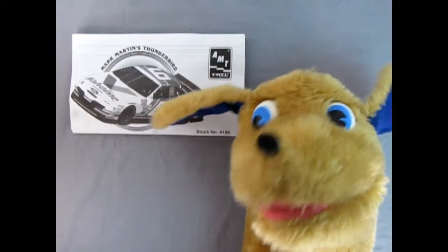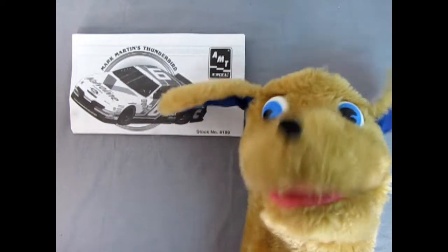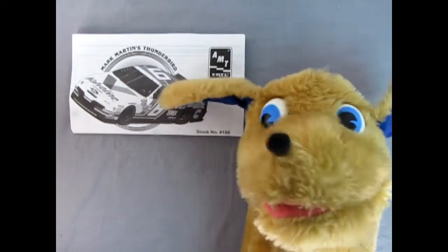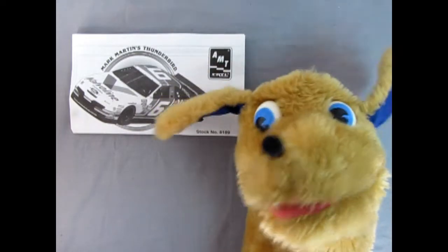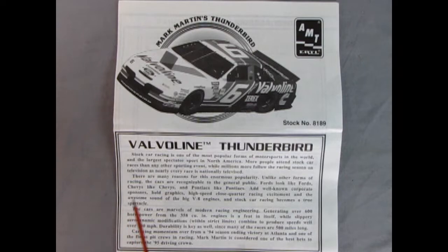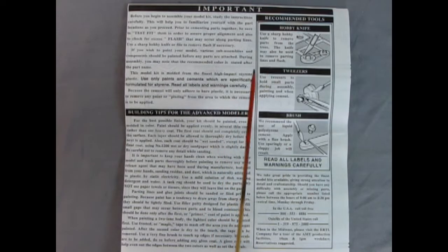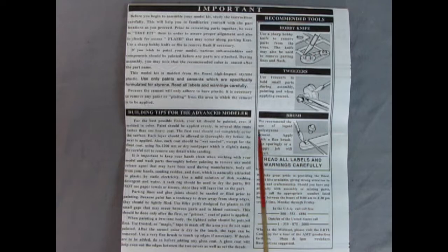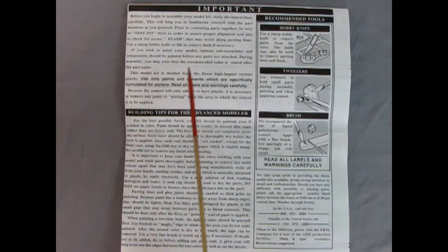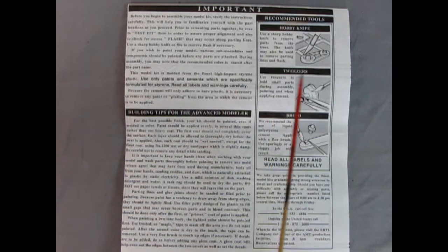Hello, everybody. This is Danny the dog, your dog on the street. And today we're looking at Mark Martin's the Valvoline Thunderbird NASCAR kit. Now, when we open up the instruction sheet a little bit, we can read this wonderful history all about Mark Martin and his amazing Thunderbird. And on this side of the sheet, we can also see the tools we're going to need and the tips for the advanced modeler and the before you begin to assemble read this part of the instruction sheet.